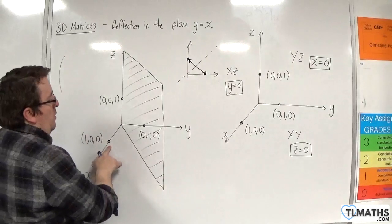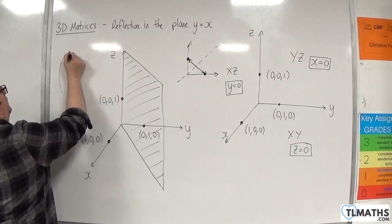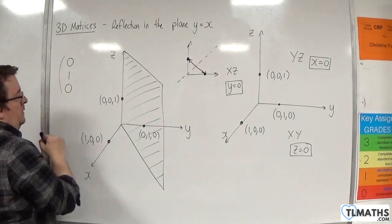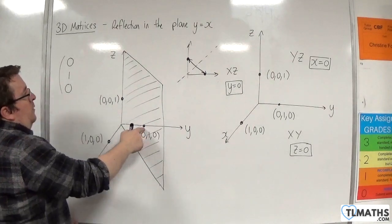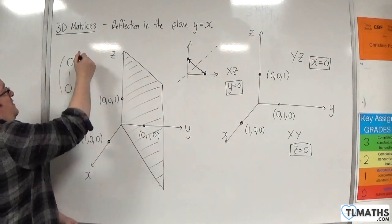So (1,0,0) will go to (0,1,0). (0,1,0) will in a similar way reflect over to (1,0,0).